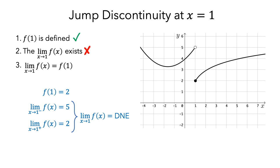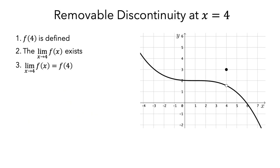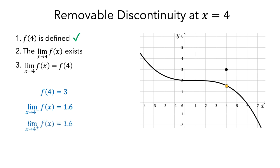Next, let's look at the function with a removable discontinuity. Based on the graph, f(4) equals 3, so f of 4 is defined, and we have satisfied the first condition. For the second condition, the limit from the left as x approaches 4 appears to be equal to 1.6. Also, the limit from the right appears to be equal to 1.6, so the overall limit is 1.6, and the second condition is satisfied. However, 1.6, the value of the limit, does not equal 3, the value of f evaluated at 4. So we haven't satisfied the third condition, and this function is not continuous at x equals 4.